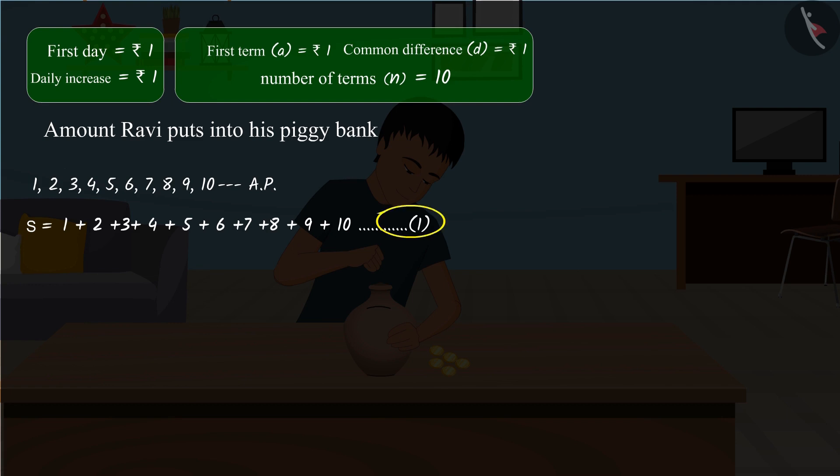By writing the terms of equation 1 in reverse order, we get equation 2. The equations 1 and 2 represent identical values. By adding equation 1 and 2, we get S equals 55.